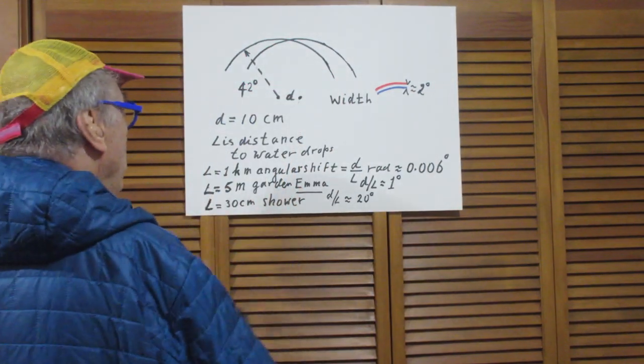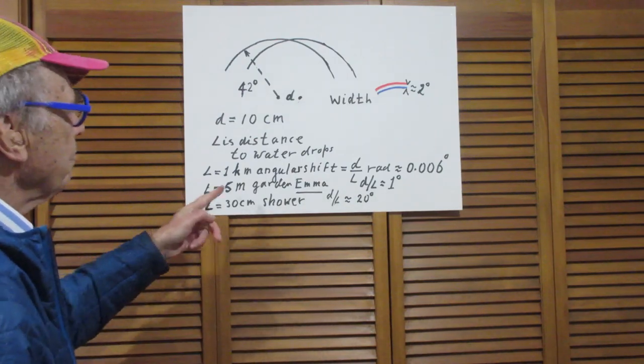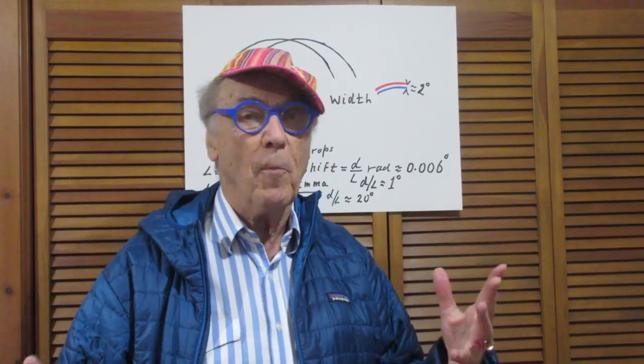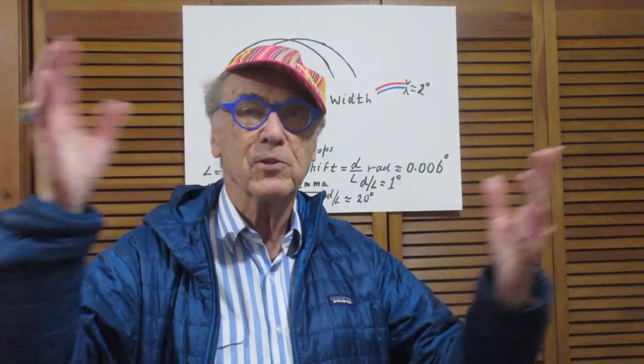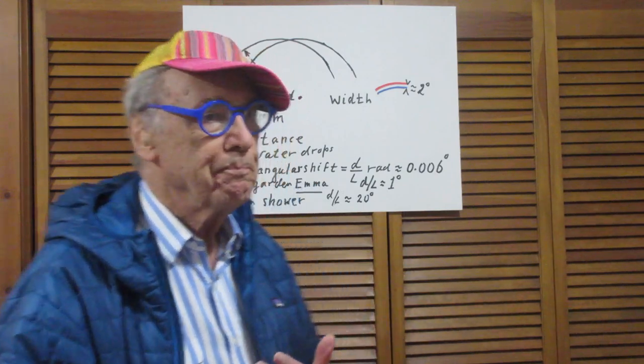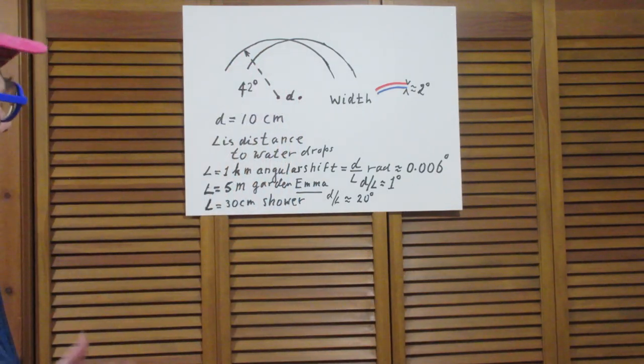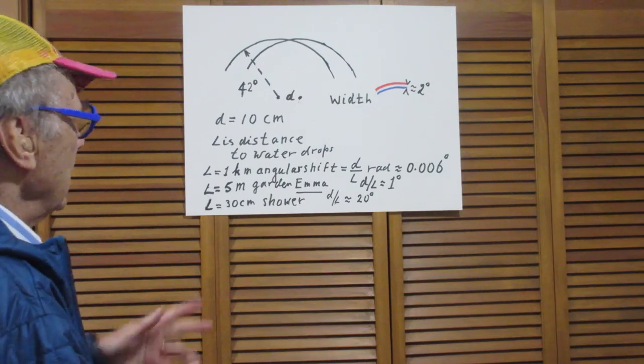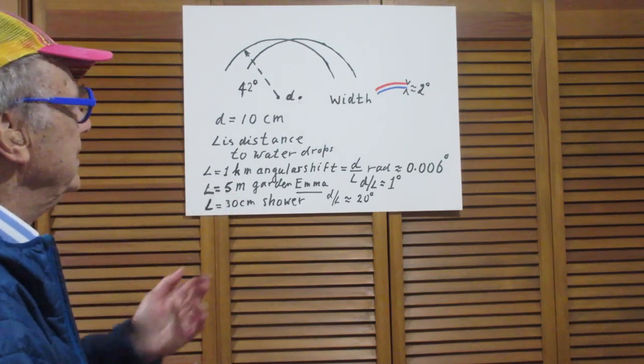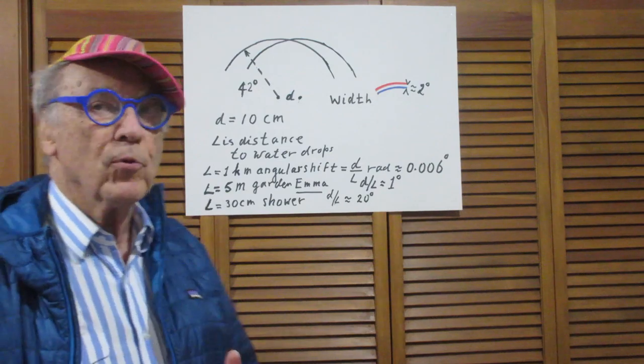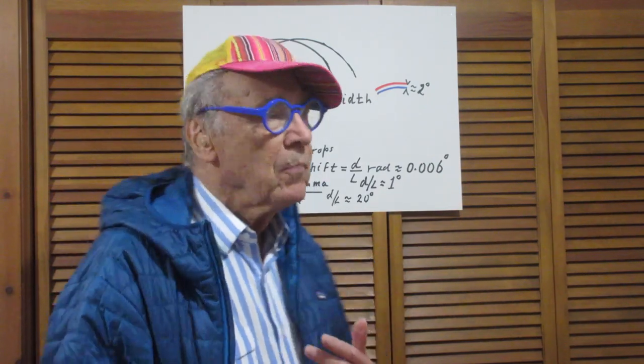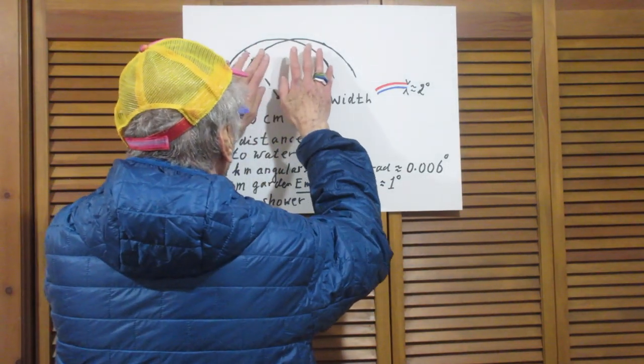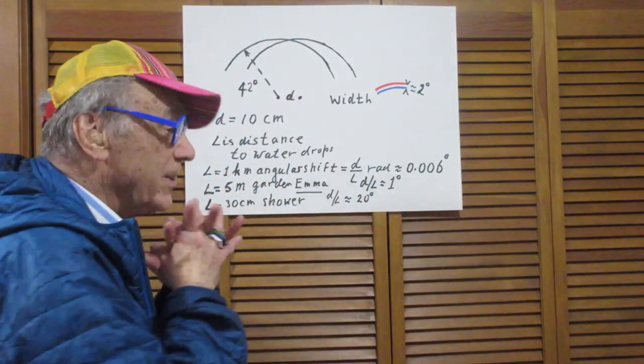Now let's go to the picture that I showed you of Emma in the garden. My guess is that I was standing about five meters away from Emma. So I was about five meters away from the water drops. D is the distance between my eyes. Five meters. D over L is now about one degree.